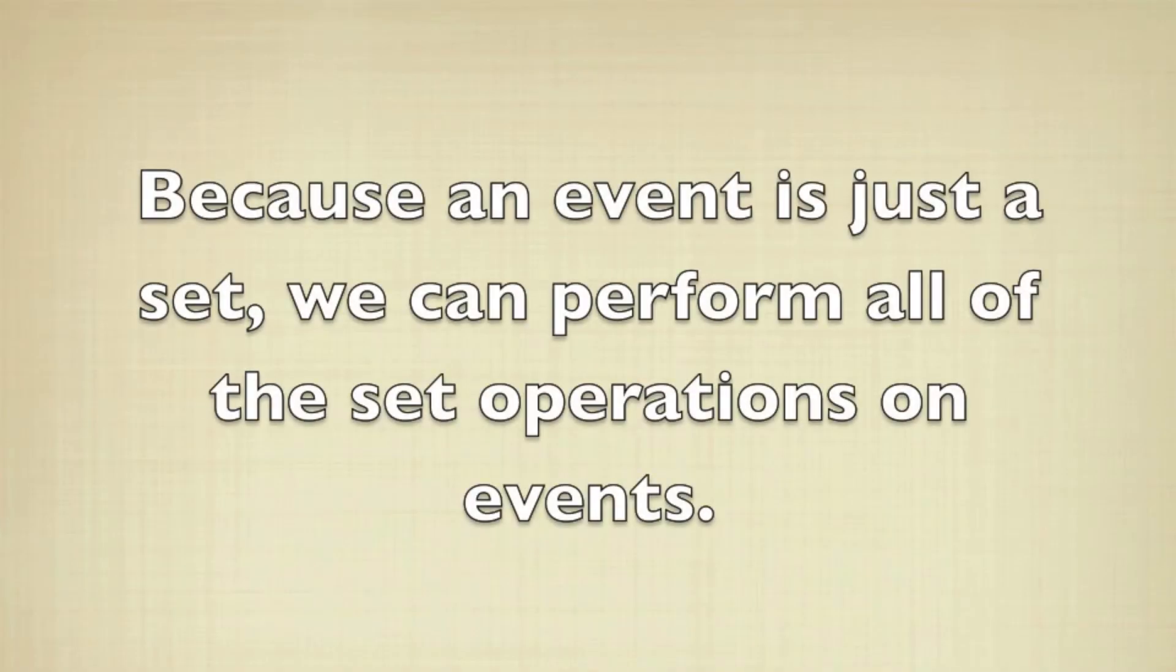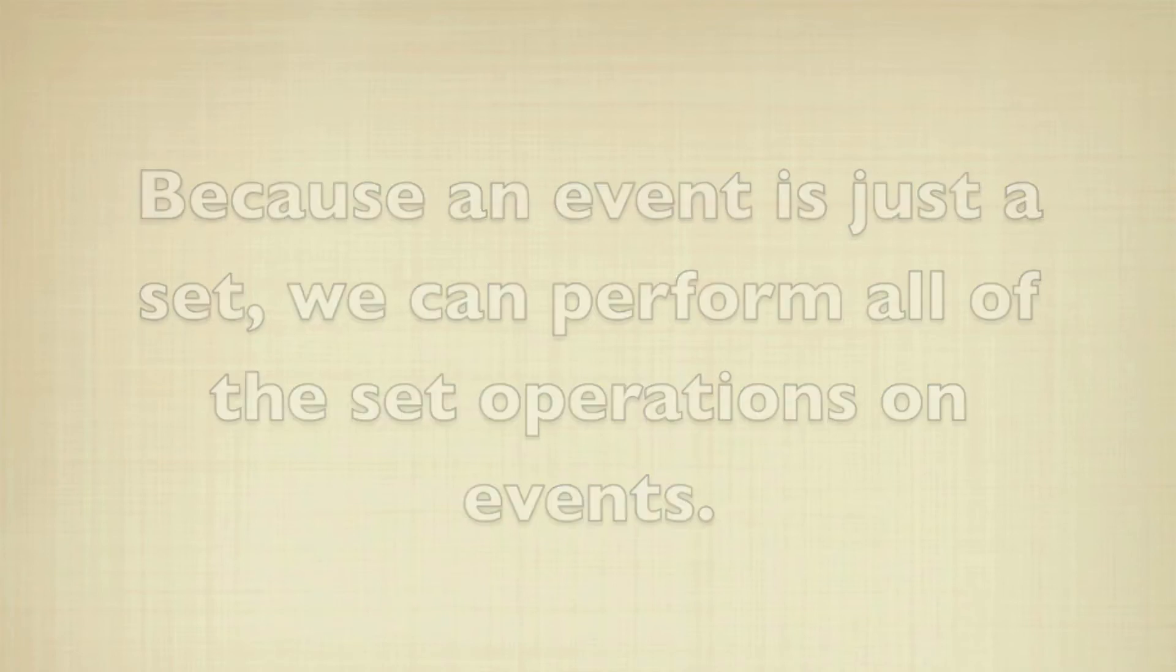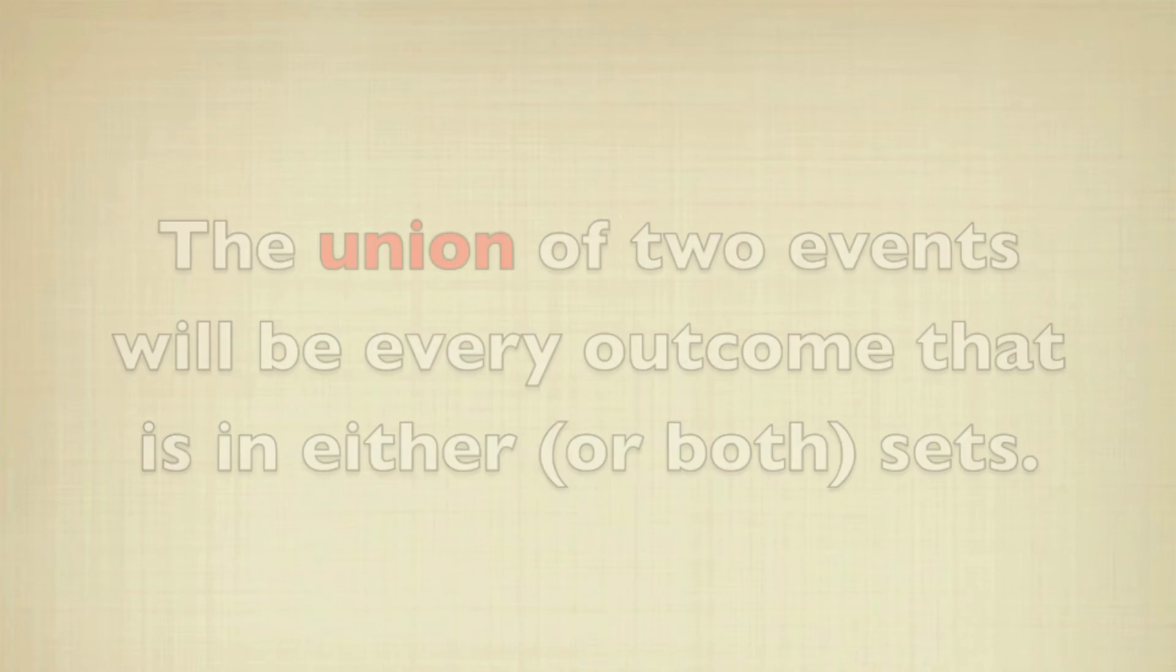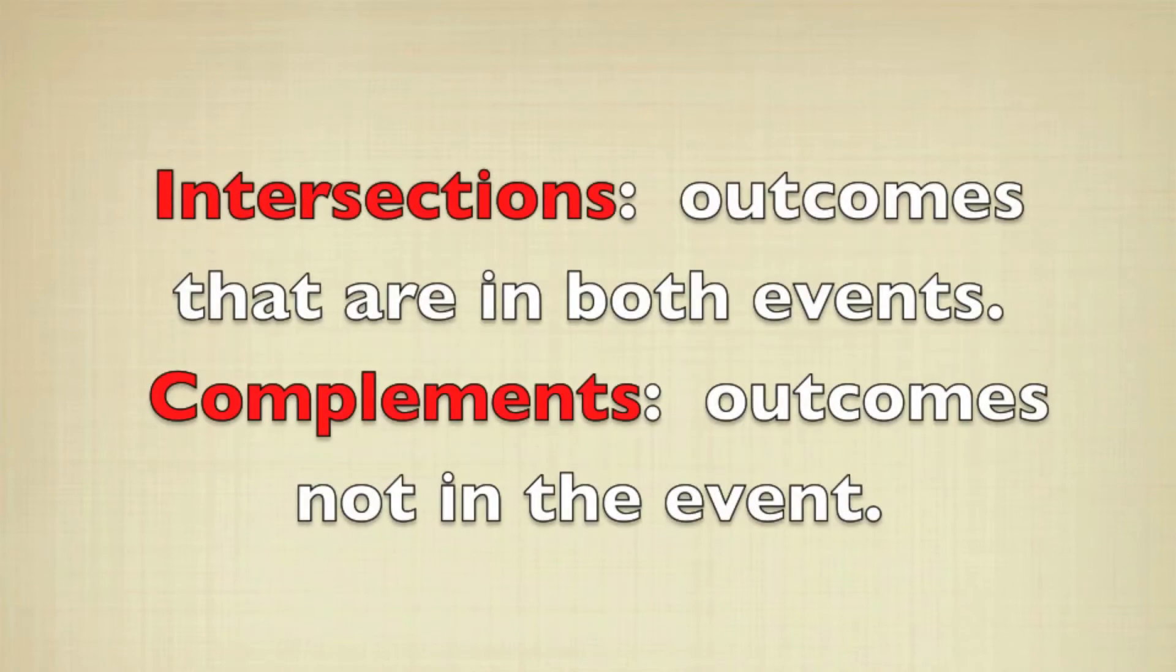Because the events are sets, we can manipulate them just as we manipulate regular sets. So we can talk about the union of two events. That'll be every outcome that's in either or both sets. The intersection will be the ones that are in both, and the complement will be the ones that are not in the event.